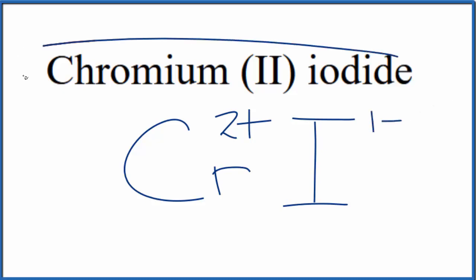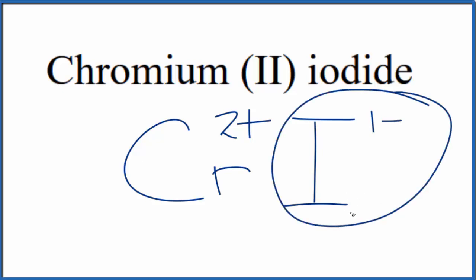So since this is neutral, we don't have the word ion after it. These charges here need to add up to zero. We need a net charge of zero. So if we had two of these iodine atoms, 2 times 1 minus, that would balance the 2+, giving us a net charge of zero.